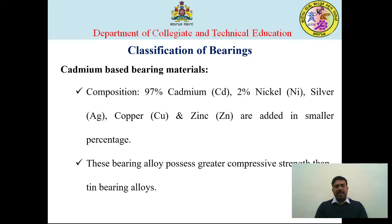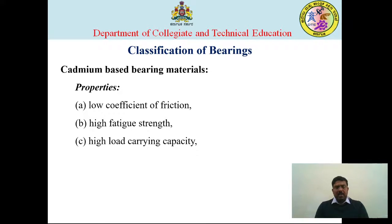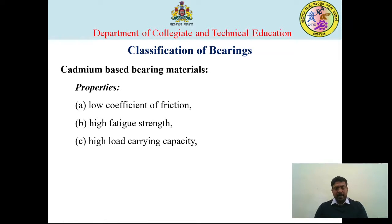The properties of cadmium-based bearing materials include high compressive strength — higher than many other bearing materials, especially tin-based bearing materials. These materials also have a low coefficient of friction, which is one of the major characteristics of any bearing material.